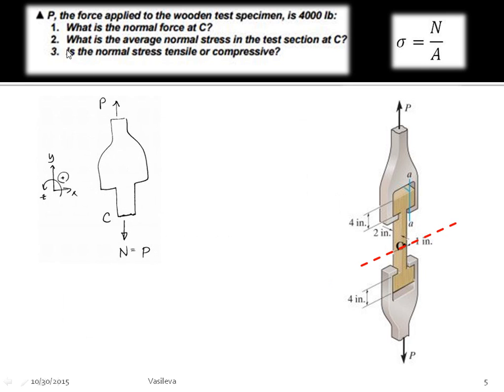And then in order to answer number three, we look at whether it's tensile or compressive. So because they are both pointing outward, outward means that it's tensile. If they were both pointing inward, then that would be compressive. So in this question, N is positive, and it is tensile. So positive is tensile, negative would be compressive.